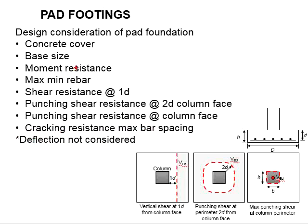In terms of the concrete cover, you will need to refer to the exposure class in Eurocode 2. As the pad footing is a substructure and normally has direct contact with the soil, we will expect a higher degree of concrete cover compared to other structural elements such as beams and slabs.